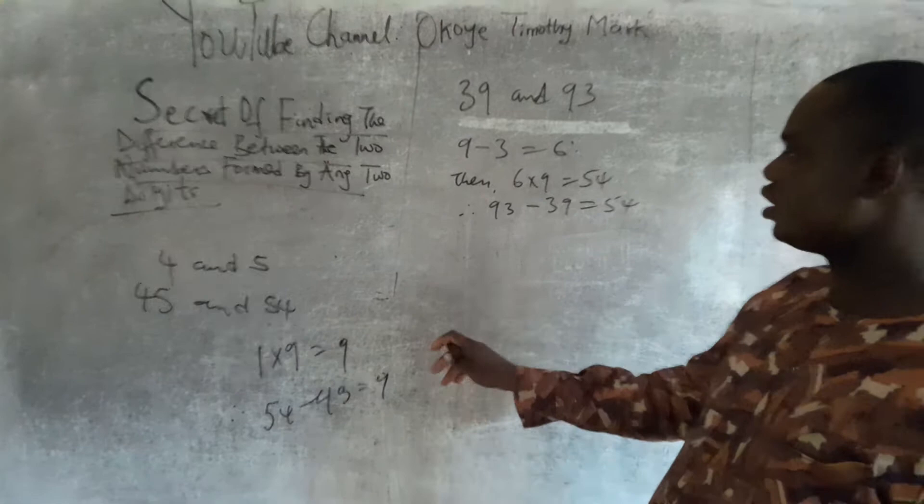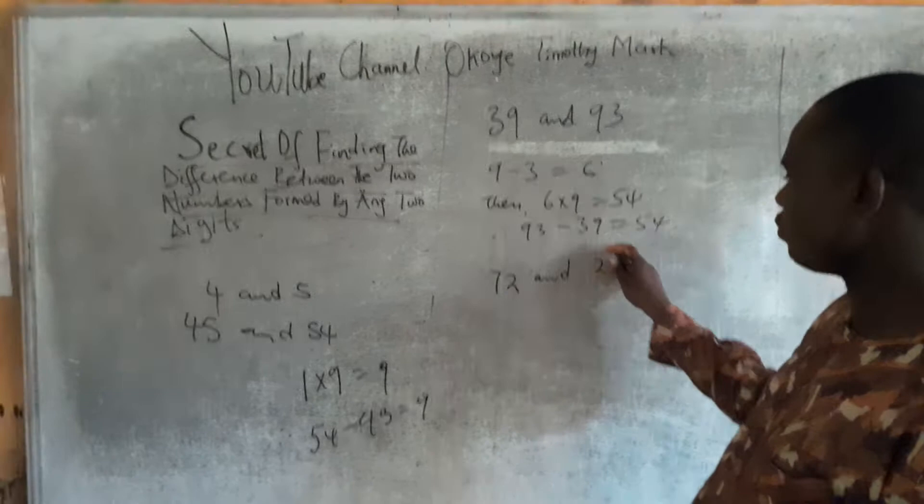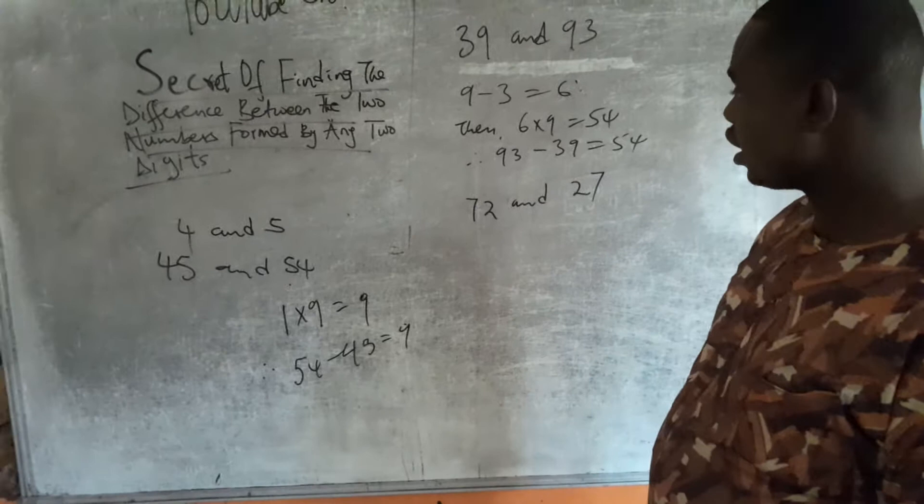Another number is something like 72 and 27. To find the difference between them, I will take 7 minus 2, the answer is 5.